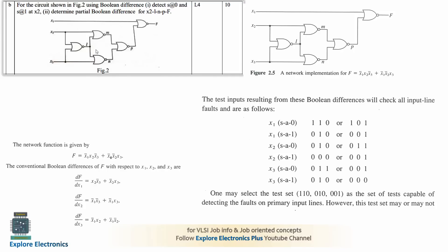We find the network expression by taking the logical gate outputs. In the question they asked for x2 only, but the example from the prescribed book shows all nodes. You can concentrate on x2 for the answer. We differentiate F with respect to x1: df/dx1 means differentiating the output F with respect to node x1.